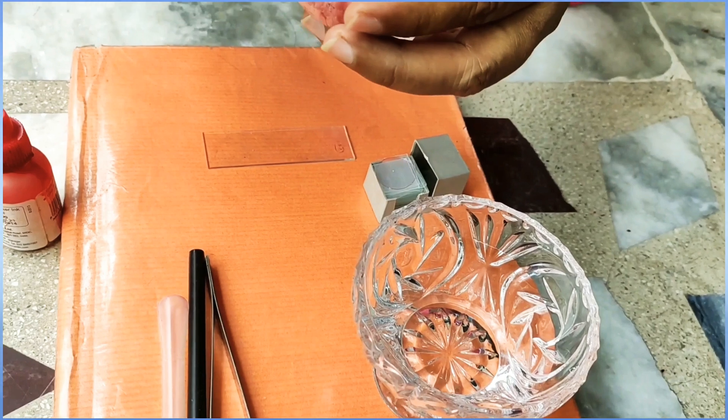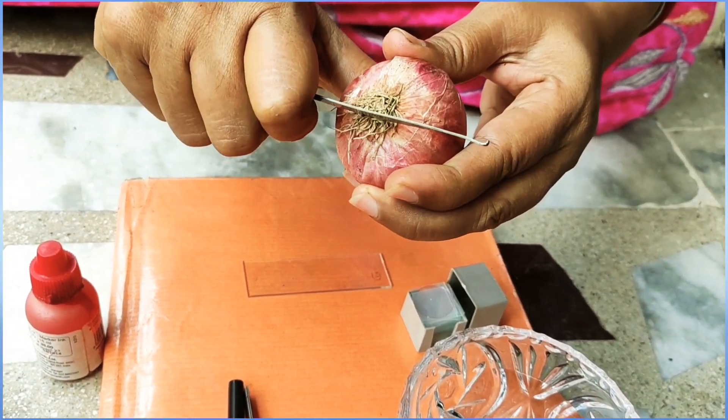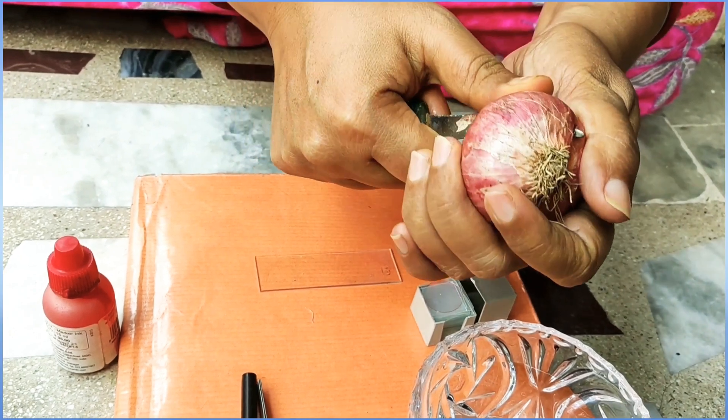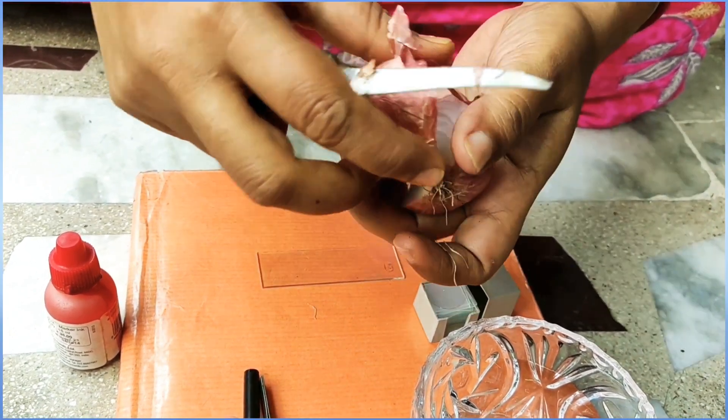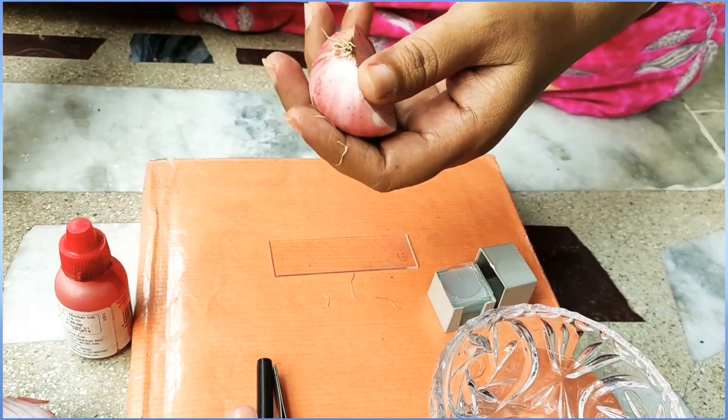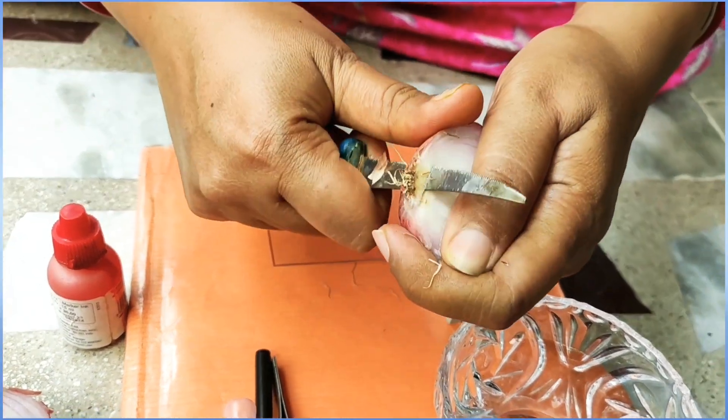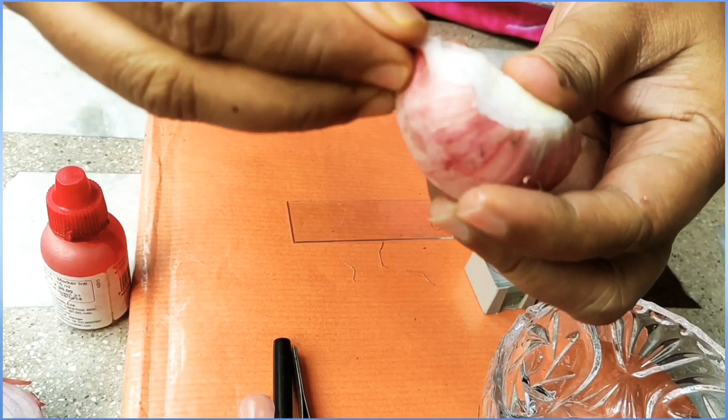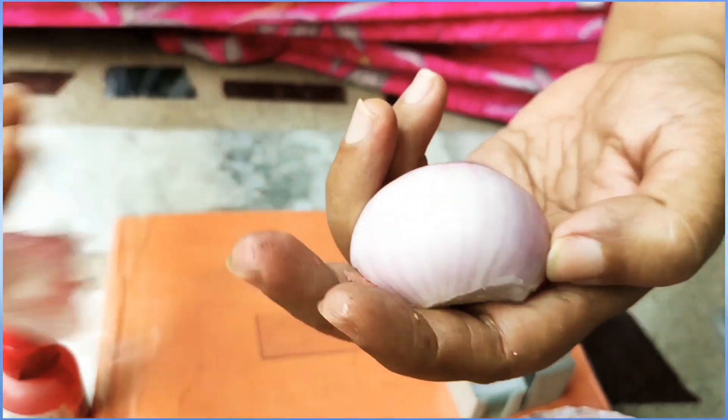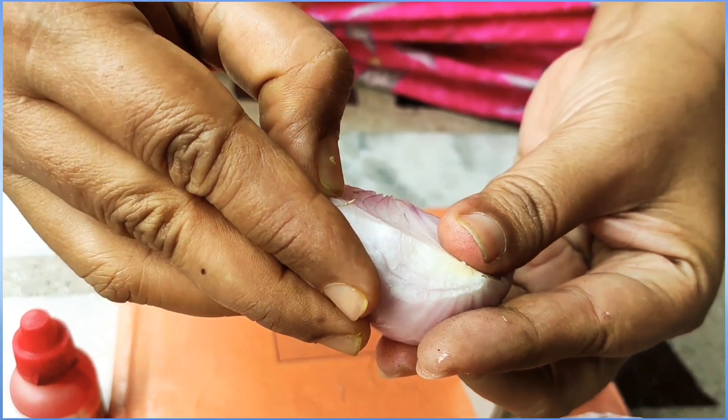After cutting it, then what you need to do is that you have to remove the outer peel, and then from the inner surface of this fleshy leaves, take out one fleshy leaf from the onion like this.